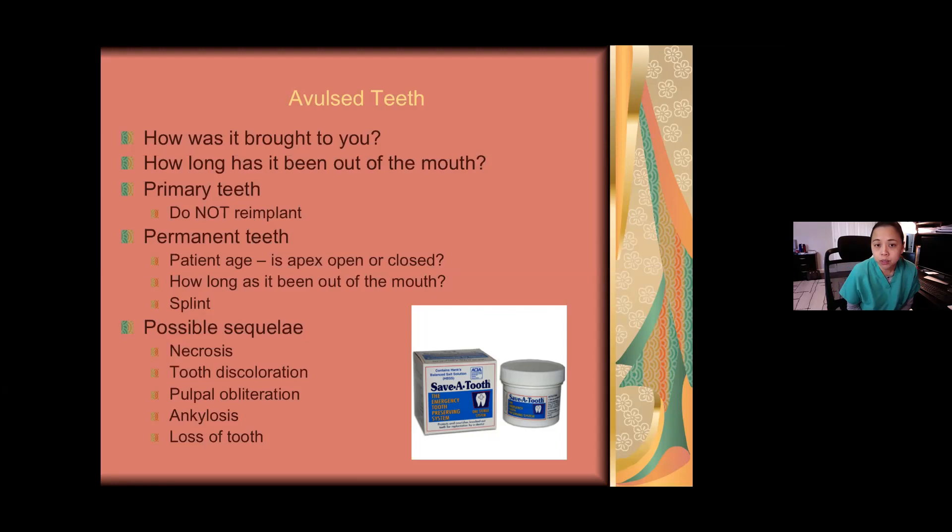Regarding tooth discoloration: the main colors you'll see are graying or blackening. Pulpal obliteration means the nerve dies and can only be diagnosed on a dental x-ray. Usually pulpal obliteration is associated with some type of discoloration, but sometimes there's pulpal obliteration without any tooth color change. And then there's ankylosis — that fusion of the tooth to the bone.